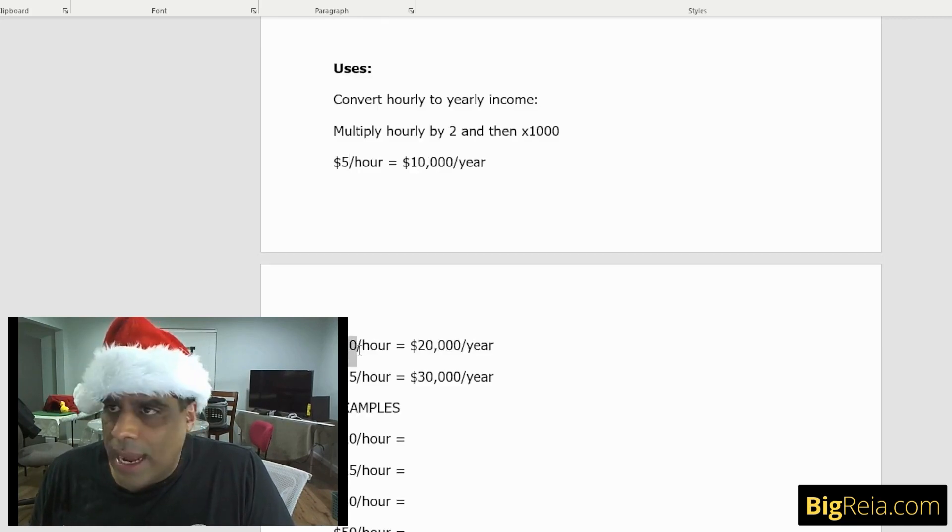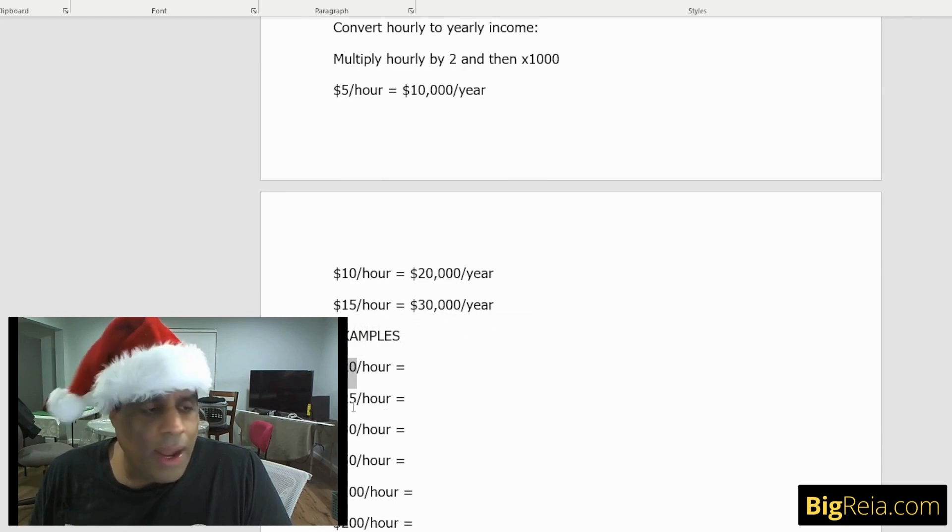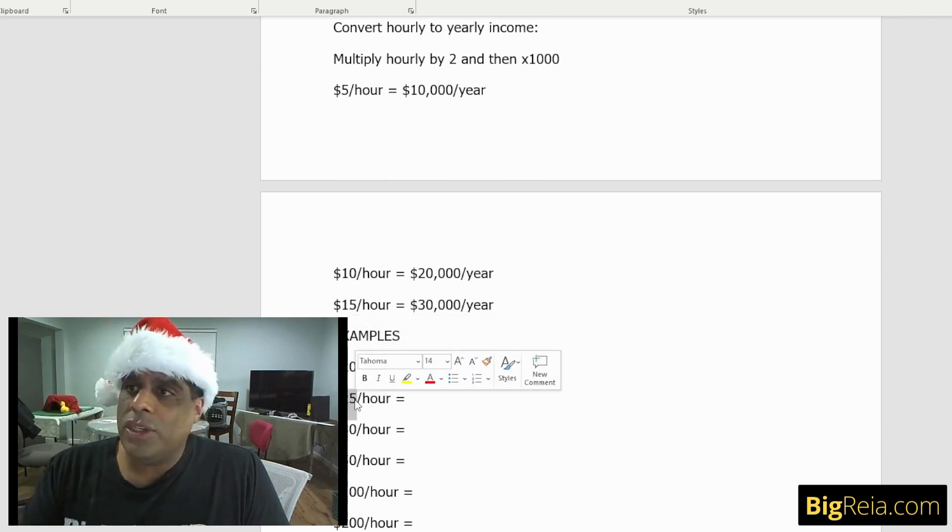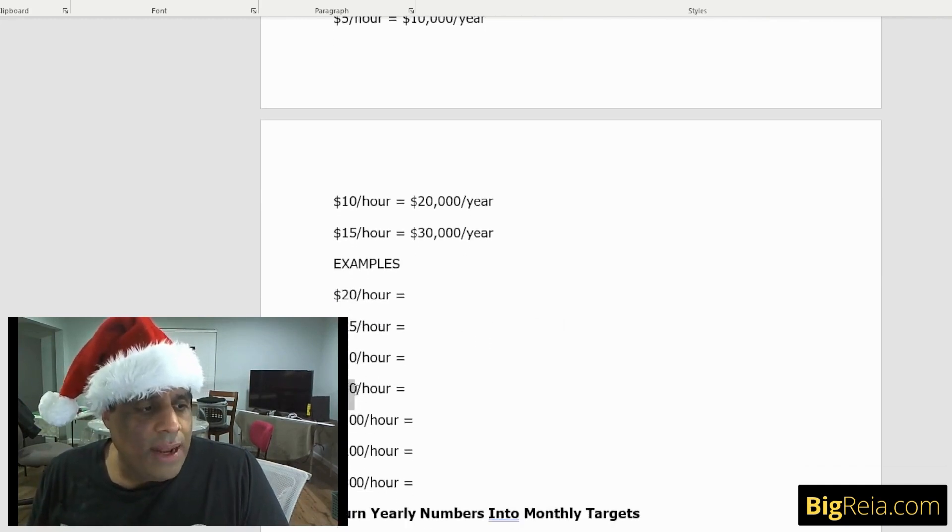If somebody's making $5 an hour, five times a thousand is five thousand, and then multiply that by two. Or the opposite, just take five times two, and then add a thousand. So five times two is $10,000 a year. $10 an hour times two is $20,000 a year. $15 an hour times two is $30,000 a year. $20 an hour times two is $40,000 a year. $25 an hour, 25 times two is $50,000 a year. $50 an hour is $100,000 a year. $100 an hour times two is $200,000 a year.